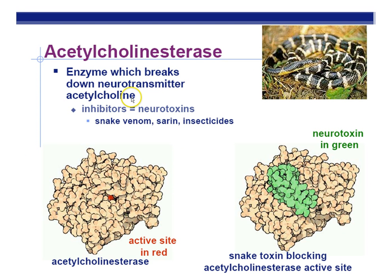You need acetylcholine to trigger muscle contraction, and you have an enzyme called acetylcholinesterase that breaks down that neurotransmitter so it's recyclable. The enzyme acetylcholinesterase has an active site — the place of attachment for acetylcholine to break it down. For snake venom, they have protein poisons that block that active site through competitive inhibition. Because acetylcholine can't bind to the active site, it can't be broken down, your muscles can't contract, and you're basically paralyzed. That's how the snake paralyzes its prey.